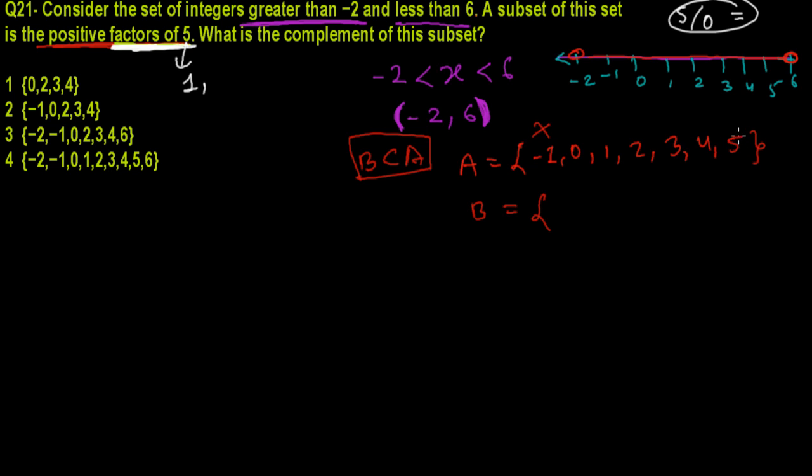But we need remainder 0, and the number itself is the factor of itself, you know. So 5 is also the factor of 5. So 1 and 5. So our B is including two elements, 1 and 5. This is our B.